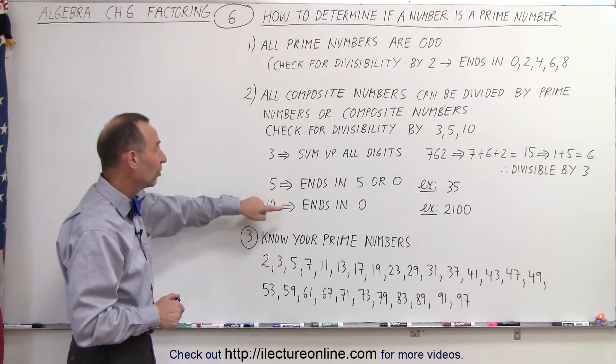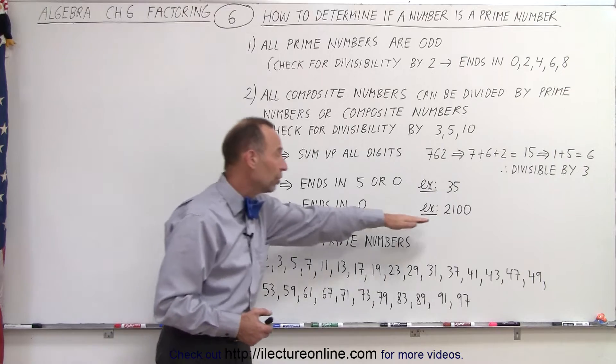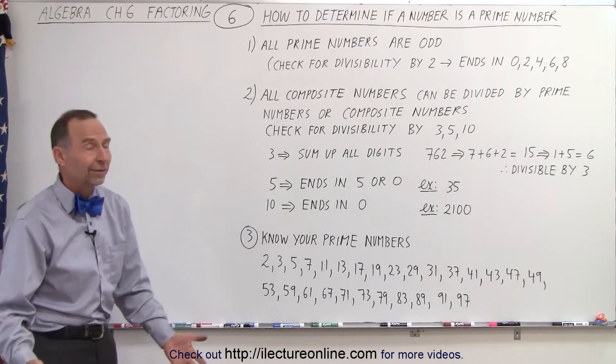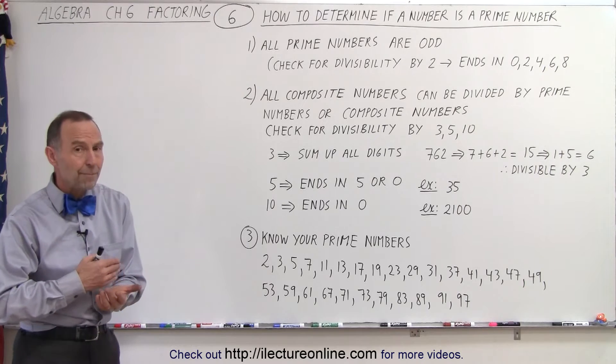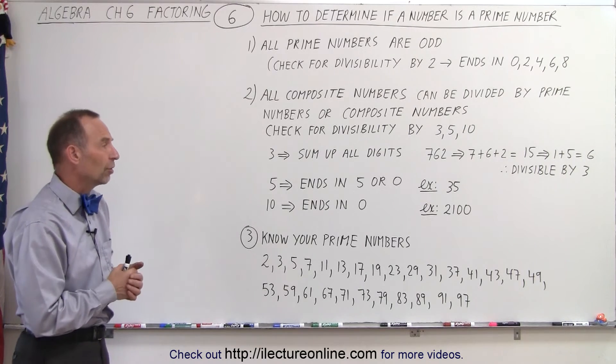Or if a number ends in 0, that's quickly seen or checked, then we know it's also not a prime number, like the number 2100. So now you realize that you can eliminate many numbers very quickly by checking those things first.